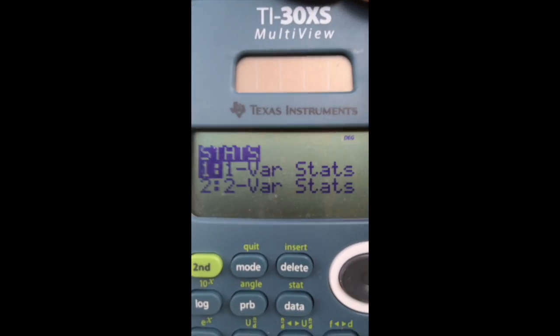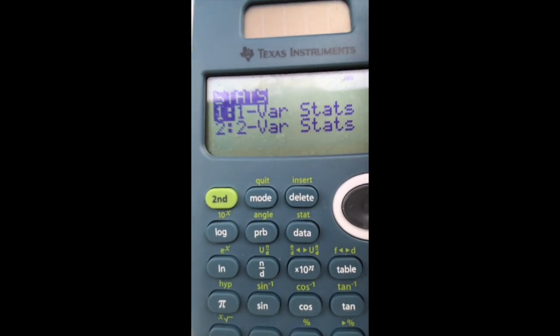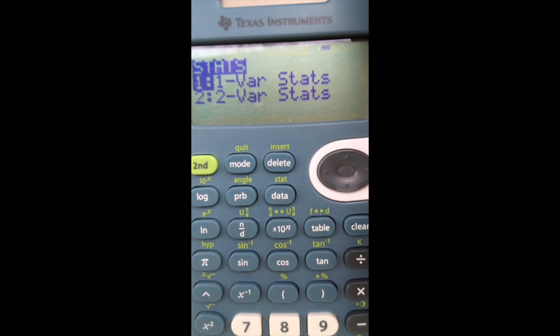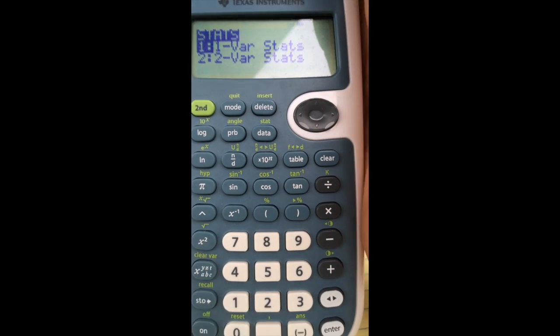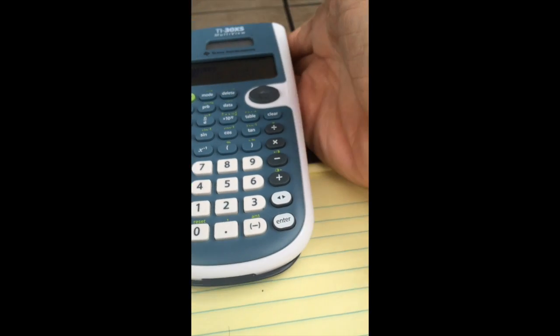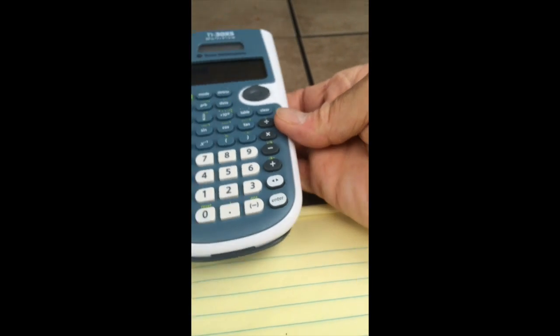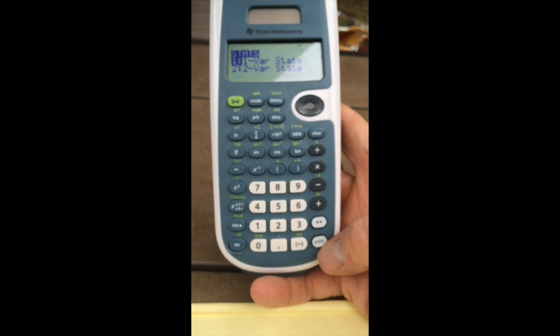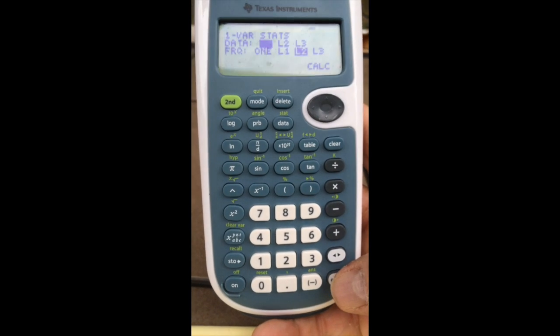The calculator says do I want one variable or do I want two variables? We want one variable stat, so I will hit enter here at the bottom. It's a little tricky holding the iPhone in one hand, the calculator in the other. I'll hit enter.